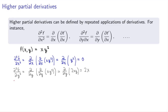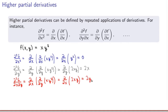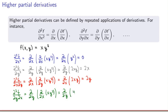Now for the two mixed second-order derivatives. First, taking the derivative with respect to y inside and then with respect to x: the derivative of xy² with respect to y keeping x constant gives 2xy, and then taking the derivative with respect to x keeping y constant gives 2y. For the other mixed derivative, taking the derivative with respect to x first and then y: differentiating xy² with respect to x keeping y constant gives y², and then taking the derivative with respect to y gives 2y.